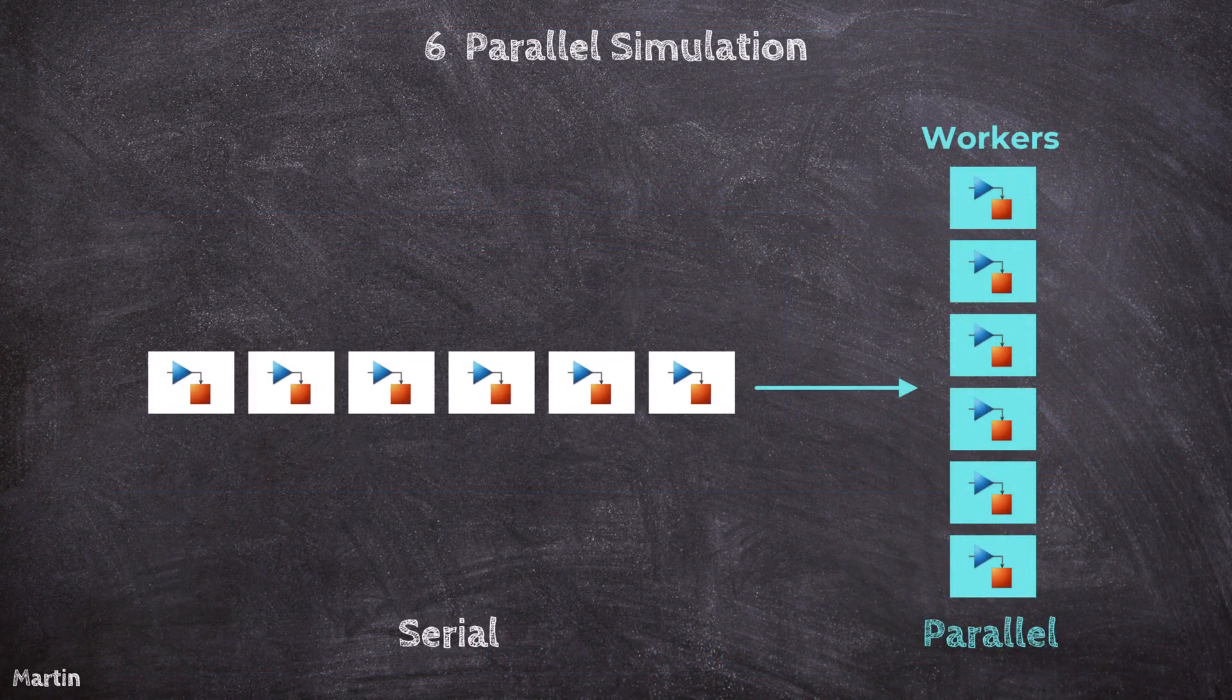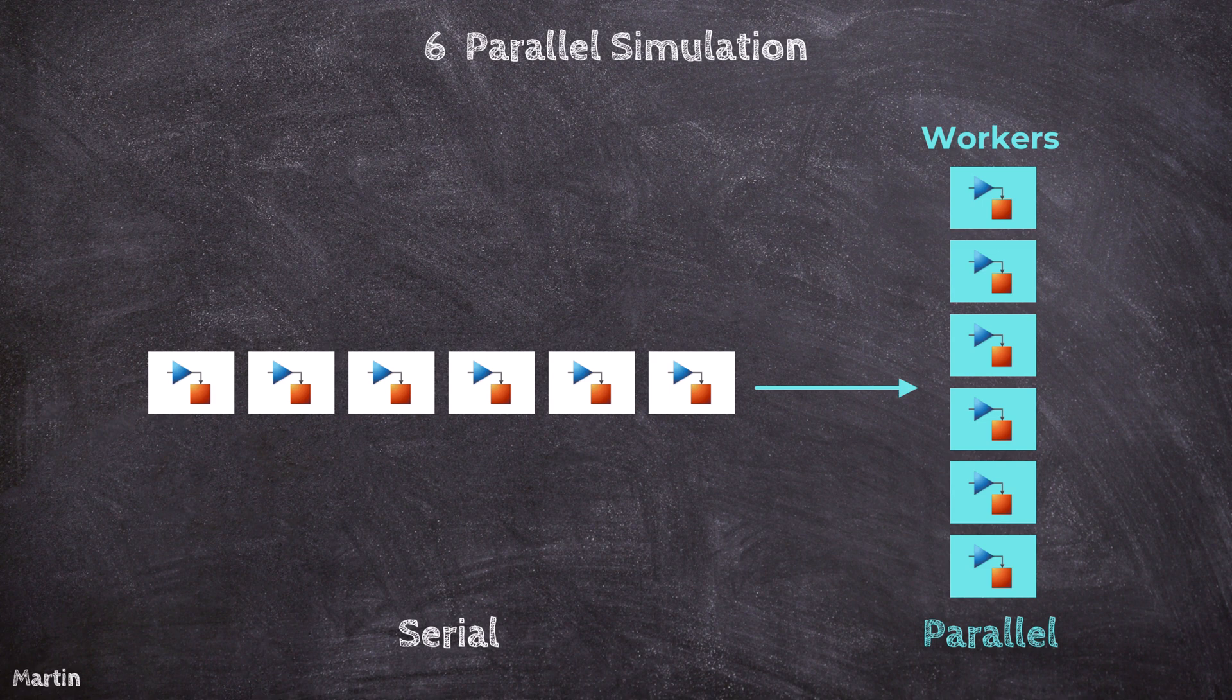In Simulink, we can enable parallel simulation to speed up simulation workflows by leveraging multi-core processors, clusters, and cloud computing resources. Parallel simulation allows us to execute multiple simulations simultaneously, making it an excellent solution for scenarios that require running the same model with different inputs or parameter settings.